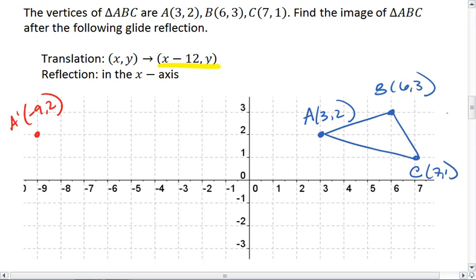B is at 6, 3. So 6 minus 12 is negative 6. B prime is at negative 6, 3.